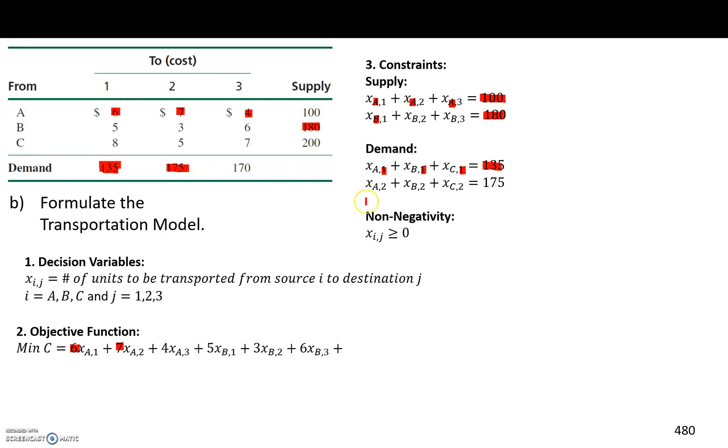And what it tells us is that the number of units that goes from A, B, and C to 1, 2, and 3, it's either 0, so we don't send any at all, or it's greater than 0, which means that it's positive.